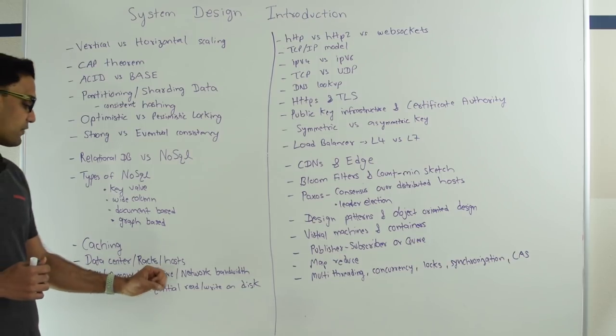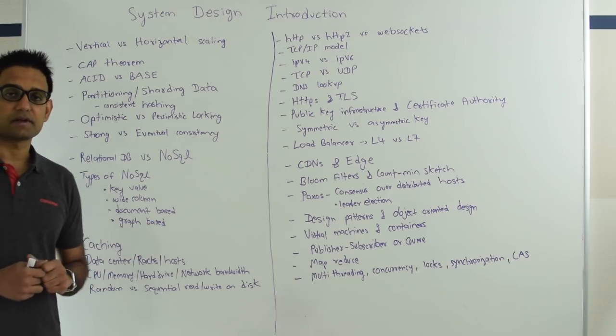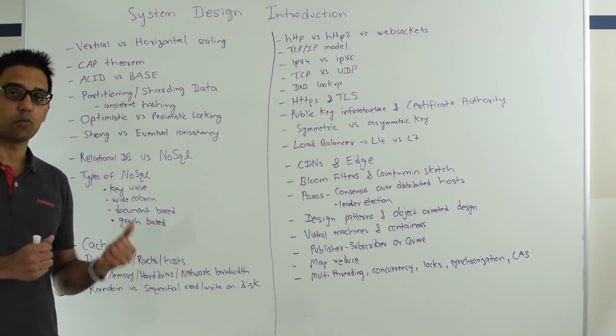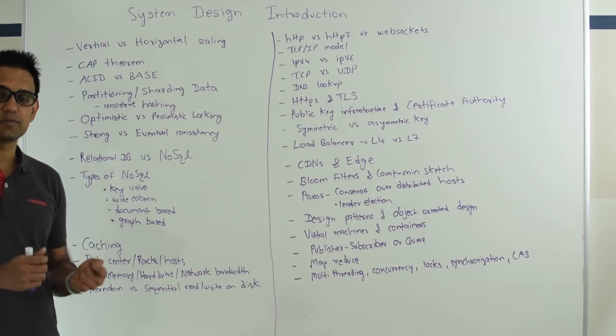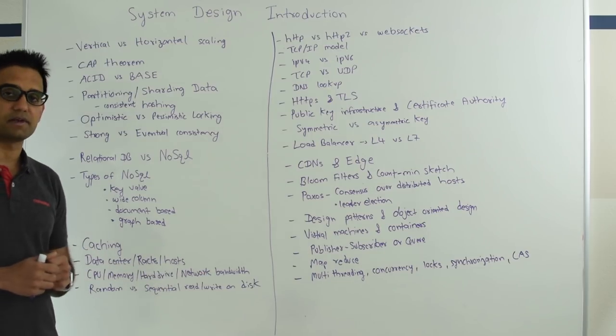Then we have CPU, memory, hard drive and network bandwidth. All of these are limited resources. So when you're designing your system, you need to consider how do you work around these limitations and how do you improve the throughput, latencies and scale your system around these limited resources.